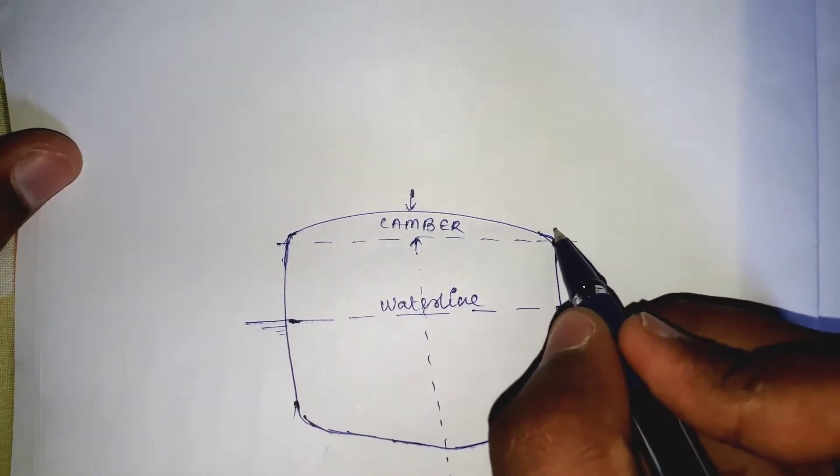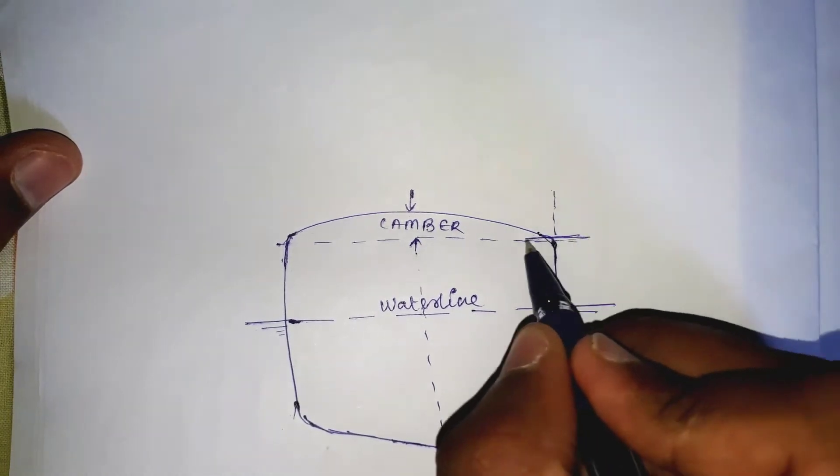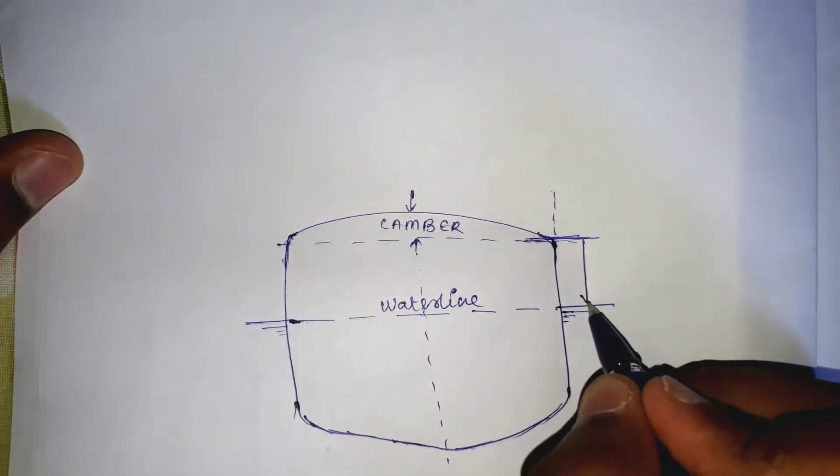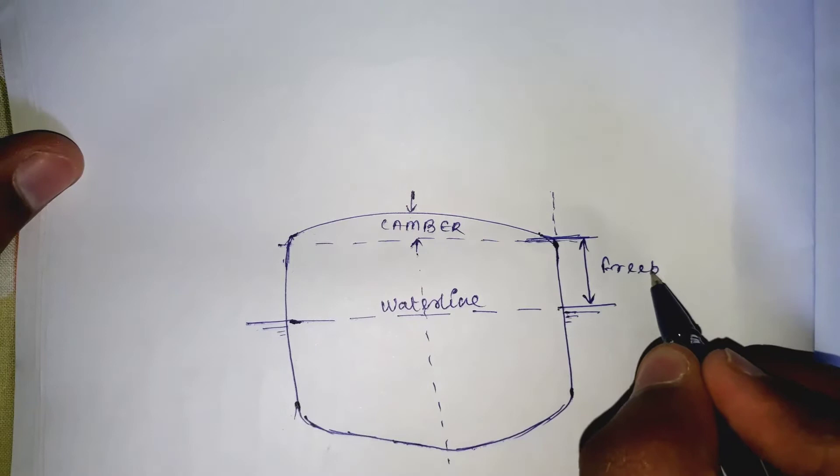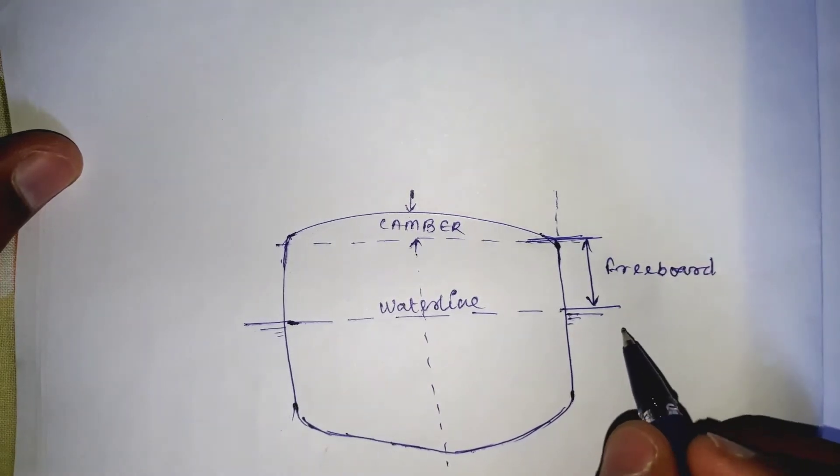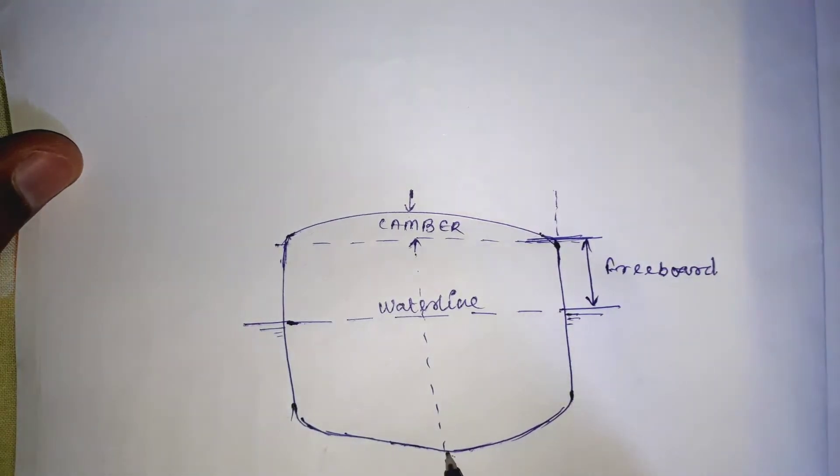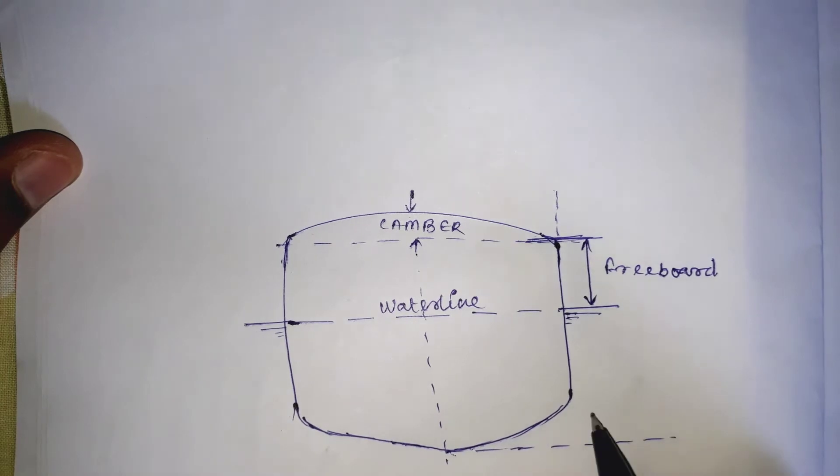Third is the freeboard. Freeboard is the vertical distance measured at the ship's side between the summer load line, that is the waterline, and the uppermost continuous deck.